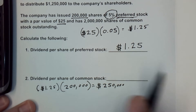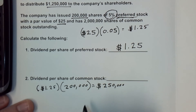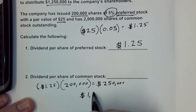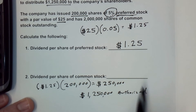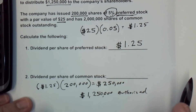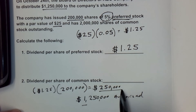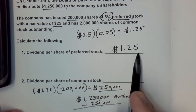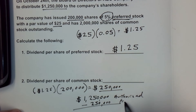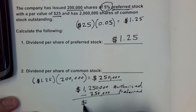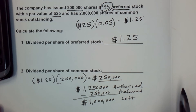We have a total of $1,250,000 authorized by the board of directors to be shared with the shareholders. I subtract out the amount paid to preferred shareholders, which is $250,000 — that's the $1.25 times the 200,000 shares. When I subtract $250,000 from $1,250,000, I'm left with $1,000,000 to be paid to the common stockholders.